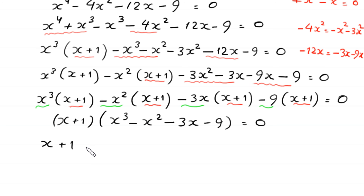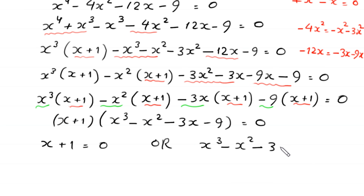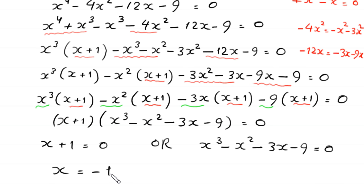From (x + 1)(x³ - x² - 3x - 9) = 0, either x + 1 = 0 or x³ - x² - 3x - 9 = 0. From the first equation, x = -1. This is the first solution.